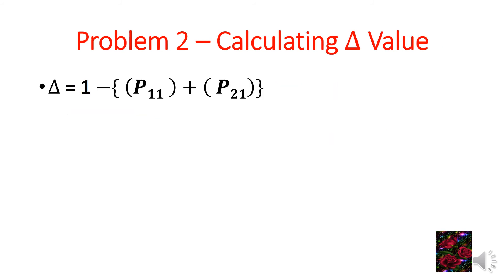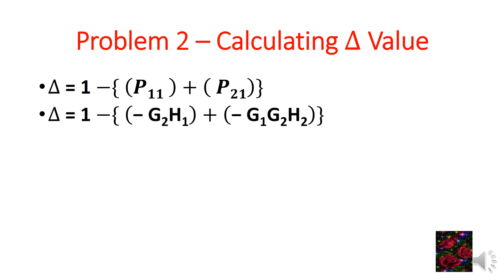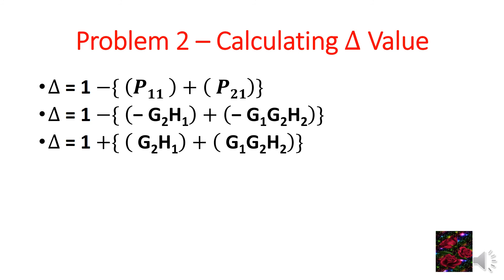Calculating delta value: delta equals 1 minus (P11 + P21) because in this problem we have only individual loops with no two or three non-touching loops. Therefore delta = 1 minus (minus G2·H1 + minus G1·G2·H2), which gives delta = 1 + G2·H1 + G1·G2·H2. This is the value of delta.